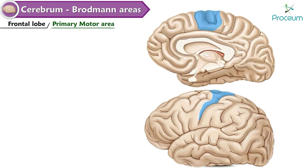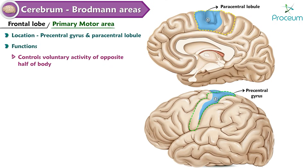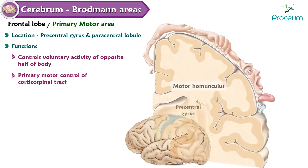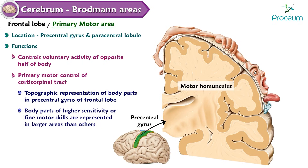Primary motor area — Area 4. Location: precentral gyrus and paracentral lobule. Functions: controls voluntary activity of the opposite half of the body; provides primary motor control of the corticospinal tract. Contains the motor homunculus, a topographic representation of body parts in the precentral gyrus of the frontal lobe. Body parts of higher sensitivity or fine motor skills are represented in larger areas, arranged medially to laterally as follows.